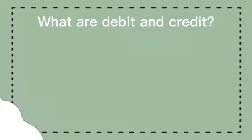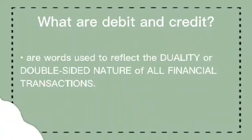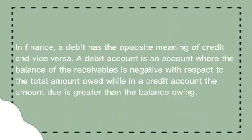In this video, we are explaining the definition of credit and debit. Debit and credit are words used to reflect the duality or double-sided nature of all financial transactions. In finance, a debit has the opposite meaning of credit and vice versa. A debit account is an account where the balance of the receivables is negative with respect to the total amount owed, while in a credit account, the amount due is greater than the balance owing.